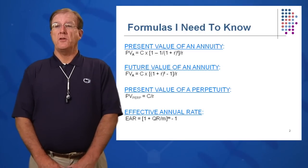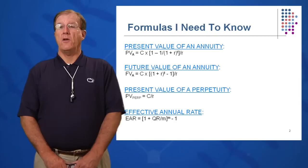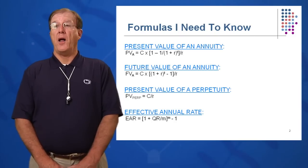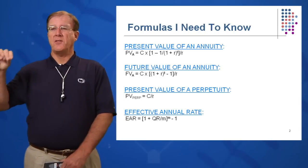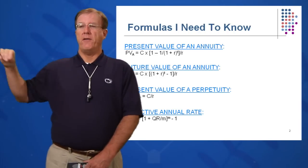Also present value of a perpetuity, which is an annuity that goes on forever. So the key word in the problem will be forever when you know you have a perpetuity. Same amount, same exact amount each year, each period forever.